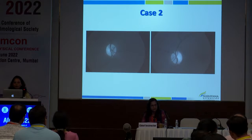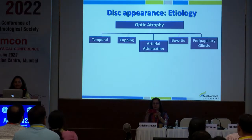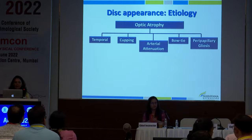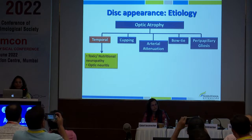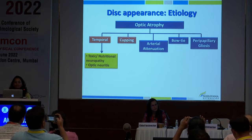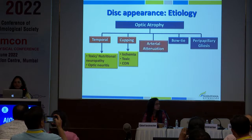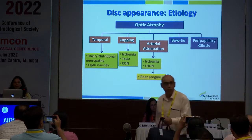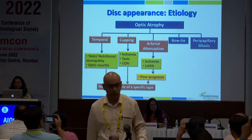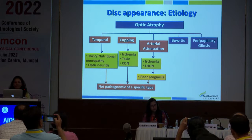When you have a typical pale disc appearance, check the etiology. In optic atrophy, you could have temporal pallor, cupping, arterial attenuation, bow tie, or peripapillary gliosis. Temporal pallor suggests toxic or nutritional neuropathy or optic neuritis. Cupping suggests ischemic, toxic, or compressive cause. Arterial attenuation suggests ischemia, RP-related problems, or LHON — which carries poor prognosis. Remember, none of these is pathognomonic; they are guidelines to direct your investigation.